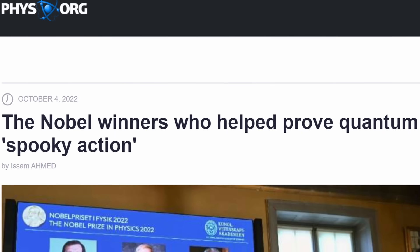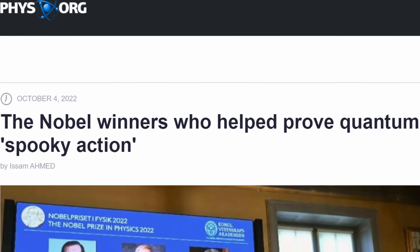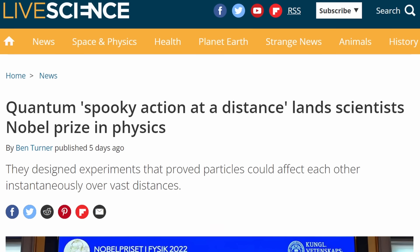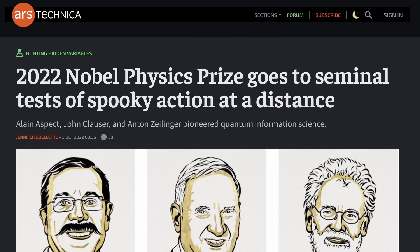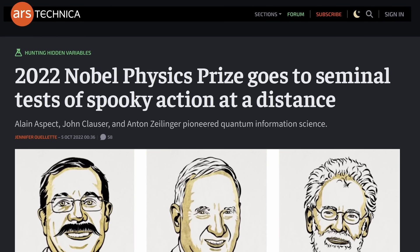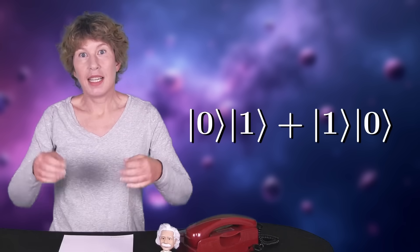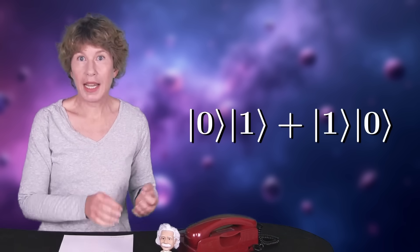4. Quantum particles exchange information faster than light. No, they don't. I think the reason people get confused about this is because of all the talk about Einstein's spooky action at a distance that, if you trust the popular science headlines, has been proven to exist. But that's not the case. What's been proven to exist is entanglement. That's a correlation, and it's not Einstein's spooky action.